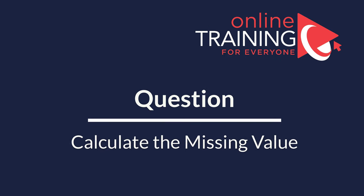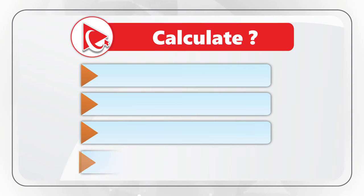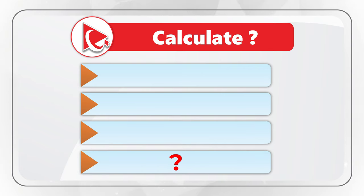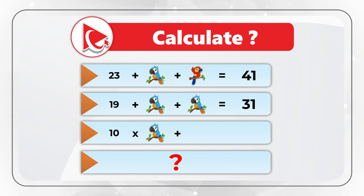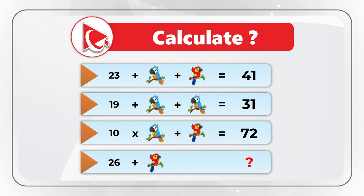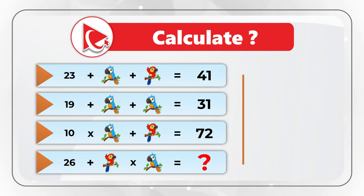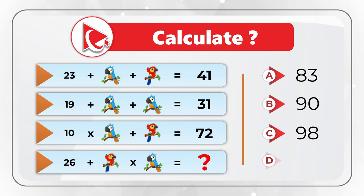One of my favorite questions is where you need to calculate the missing value. You're presented with three equations and a fourth equation where the result is missing. The first equation is 23 multiplied by blue parrot plus a red parrot equals 41. Second equation: 19 plus blue parrot plus blue parrot equals 31. Third equation: 10 multiplied by blue parrot plus red parrot equals 72. The last expression is 26 plus red parrot multiplied by blue parrot equals the missing value. You need to select the missing value out of four choices: A) 83, B) 90, C) 98, D) 107.